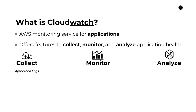So application logs are one category, but there's another category of logs, which is just general AWS service logs — things like maintenance, errors, upgrades, and things like that that are relevant to certain AWS services. So collection is a very huge component of CloudWatch.